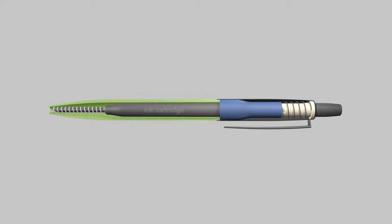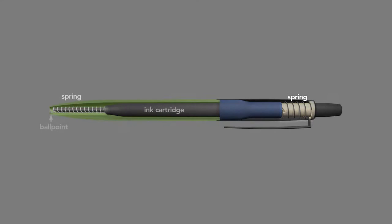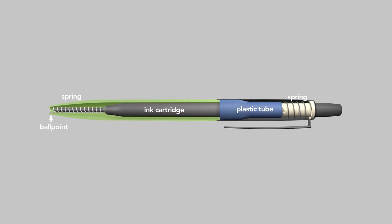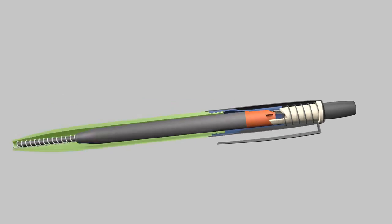The pen's barrel houses an ink cartridge with the ballpoint tip, two springs, one at the top and one at the bottom, and a plastic tube which is press-fit inside the metal barrel of the pen so that it's fixed in place. Inside that tube is where all the action happens.